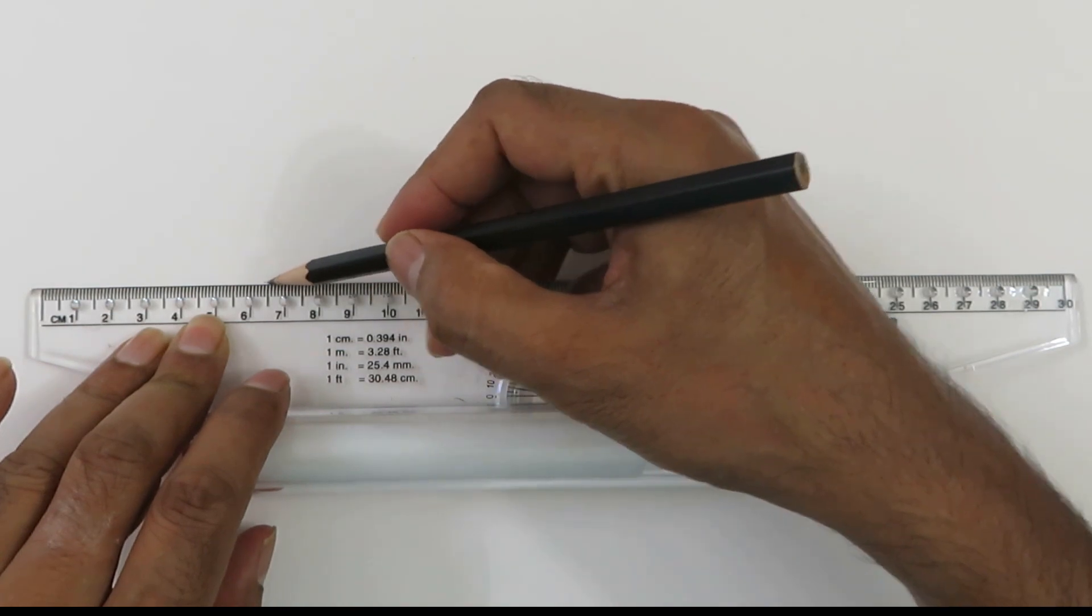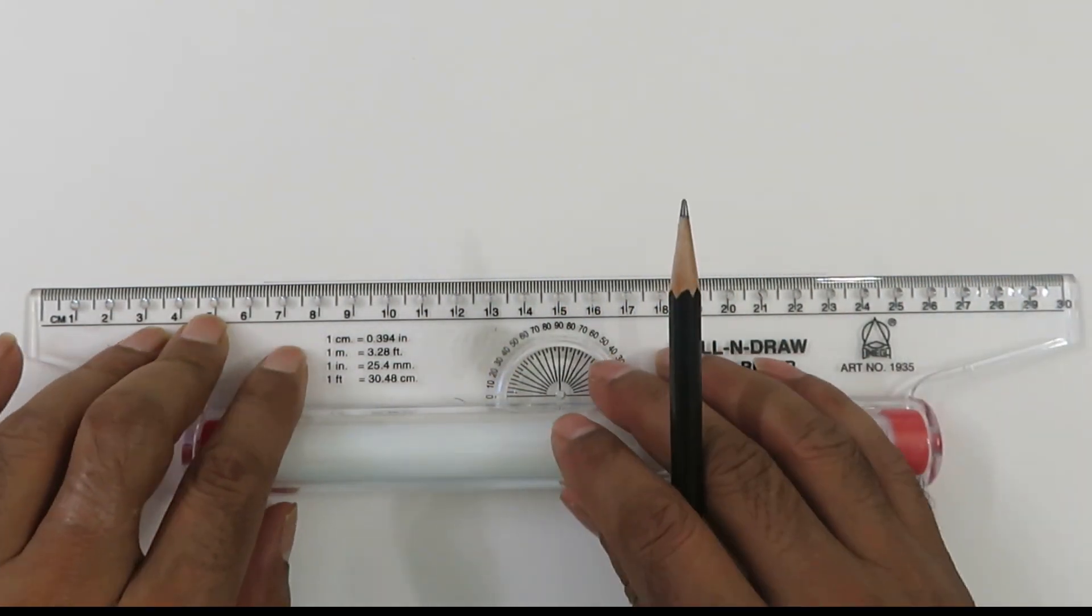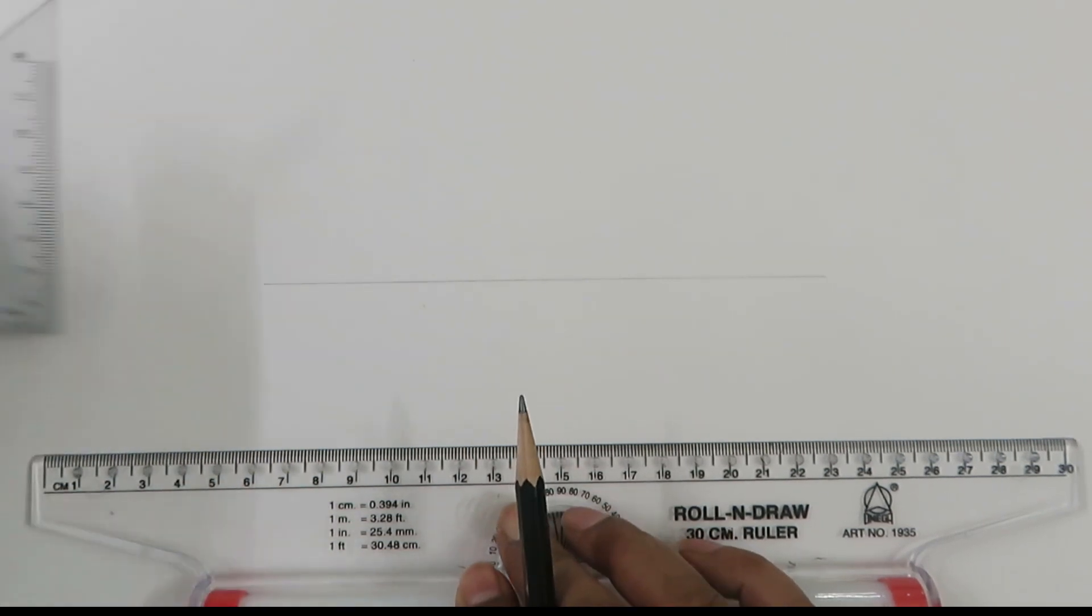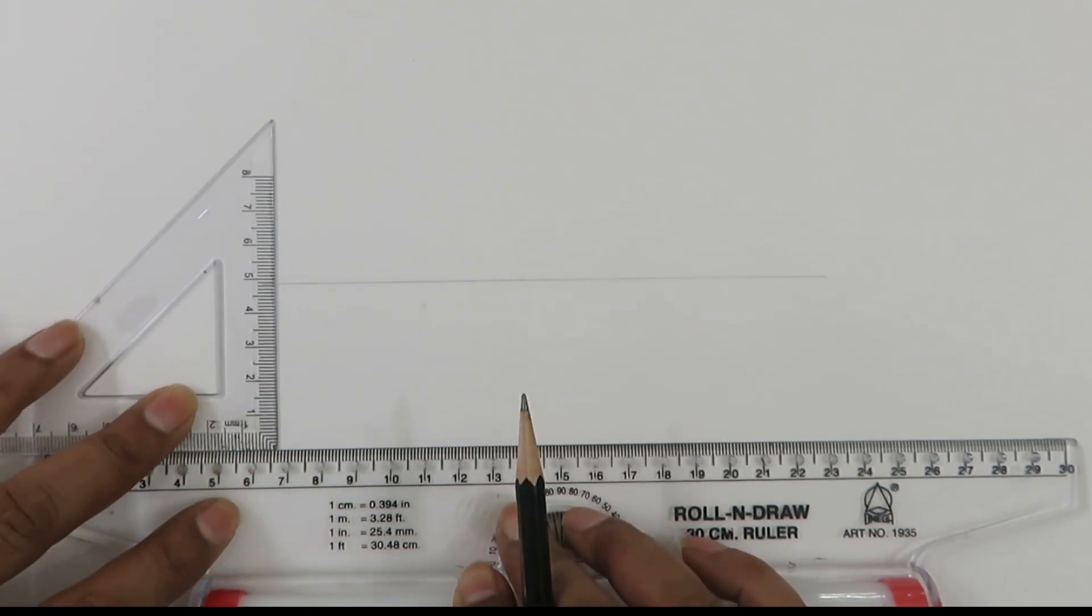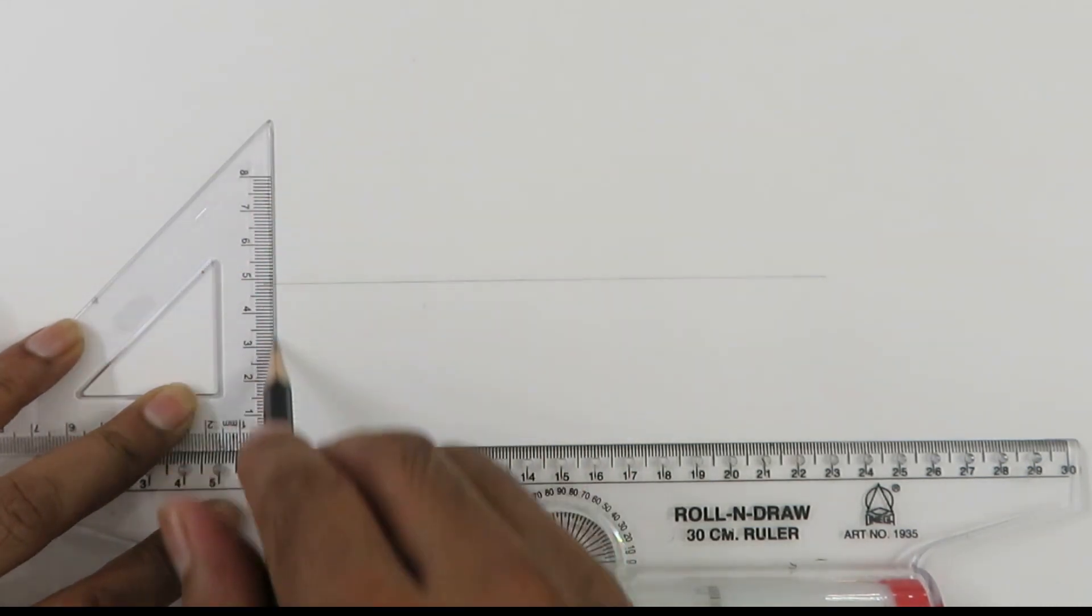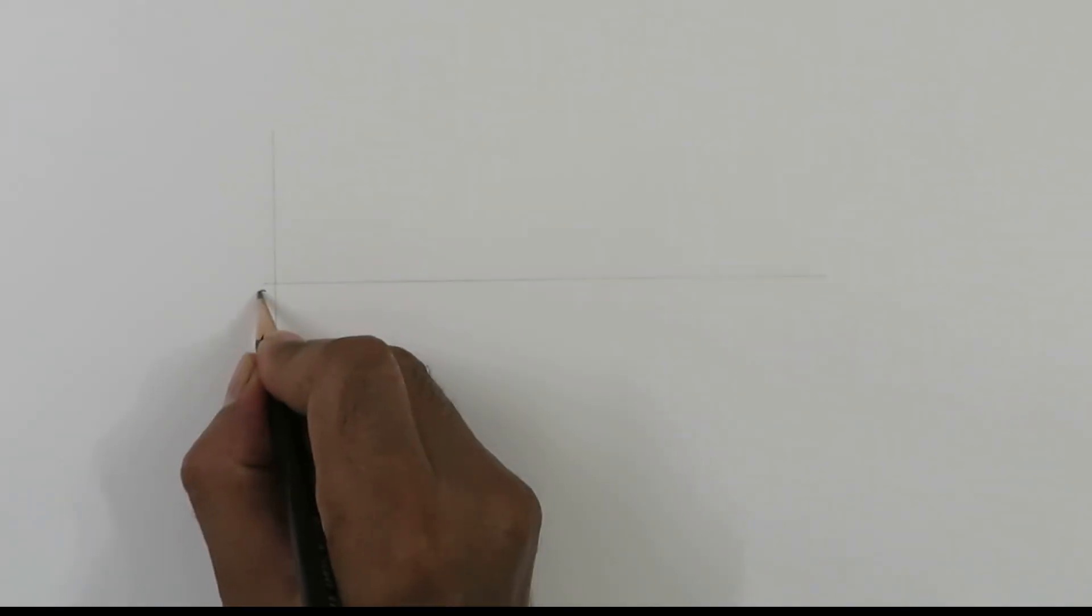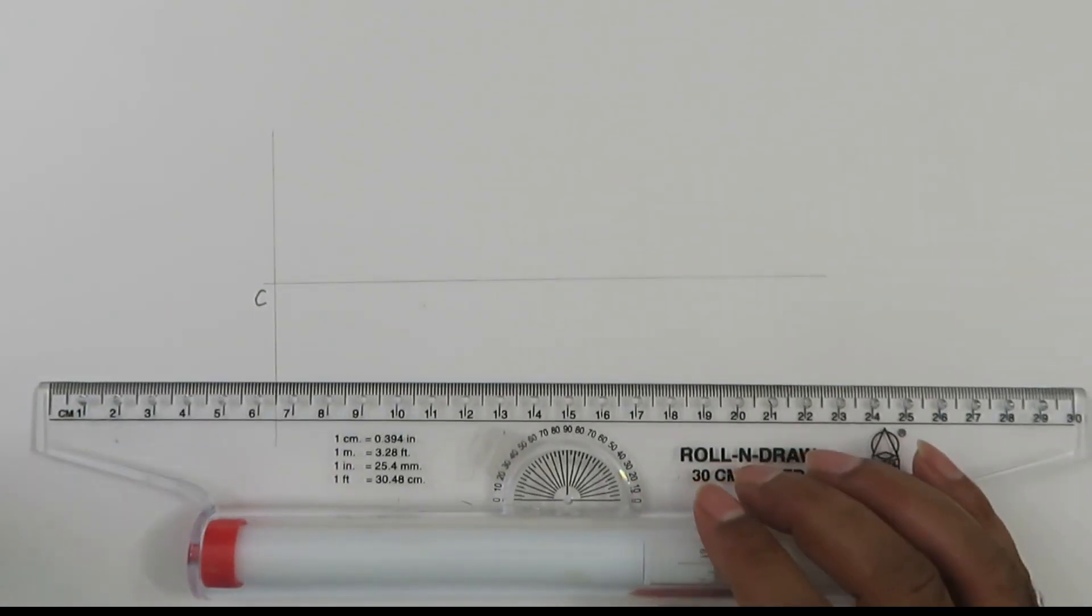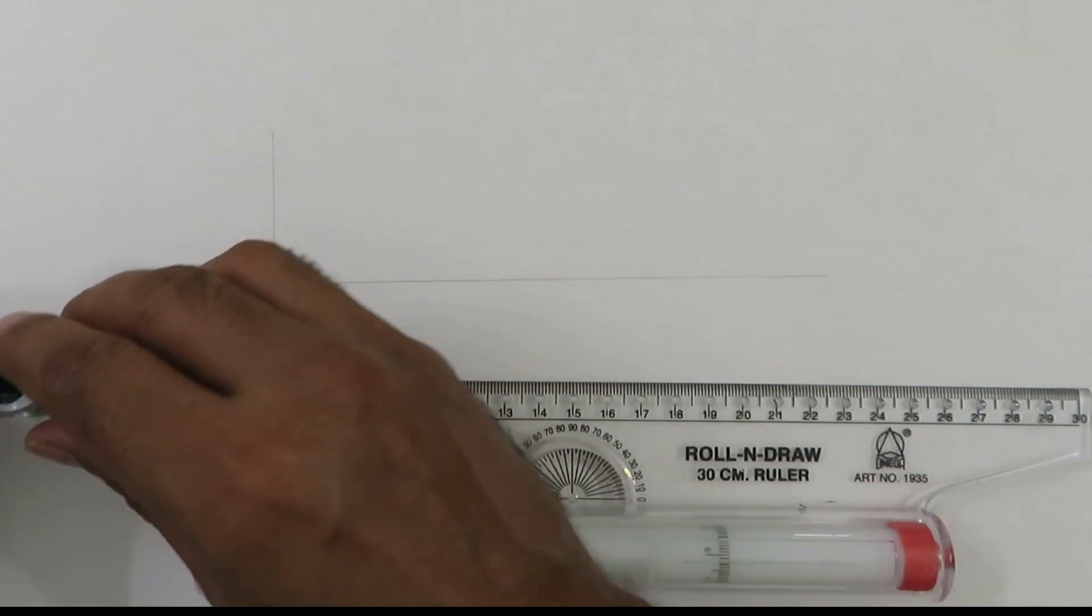First of all we will draw a straight line. This will be the major axis of the ellipse and we will draw the directrix. Let's call this point as C and the focus is at 50 millimeter from the directrix.